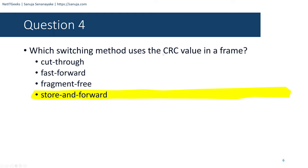Question number fifteen: What is the primary role of the physical layer in transmitting data on the network? Options are: create the signals that represent the bits in each frame on the media; provide physical addressing to devices; determine the path packets take through the network; or control data access to the media. The answer is it creates the signals that represent the bits in each frame on the media.